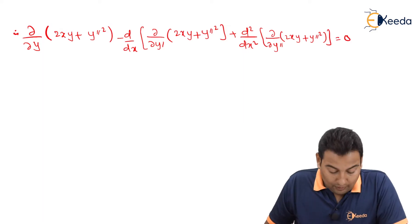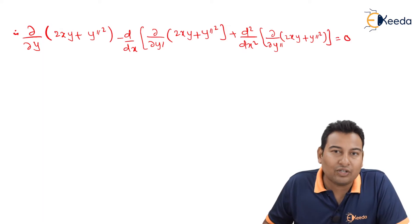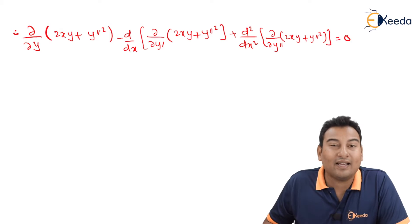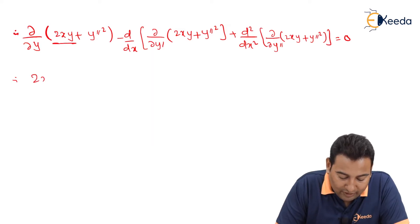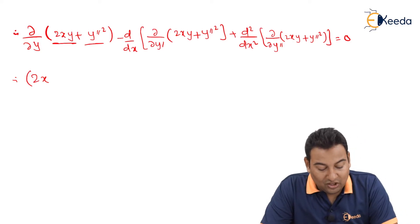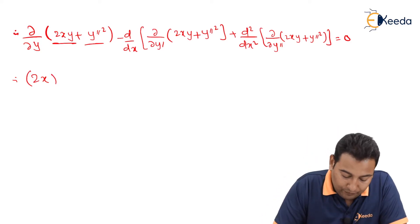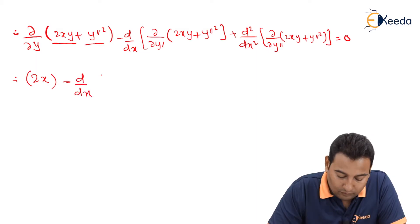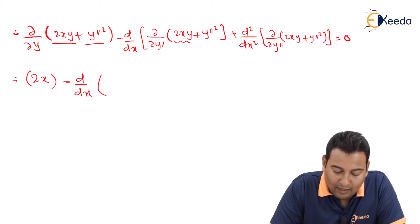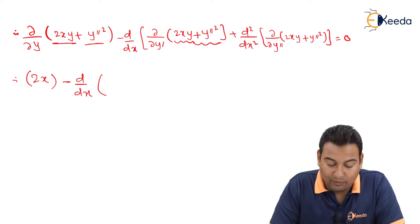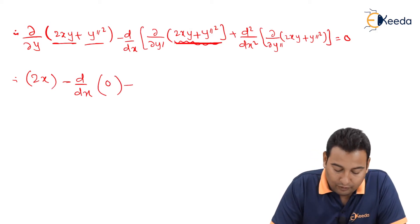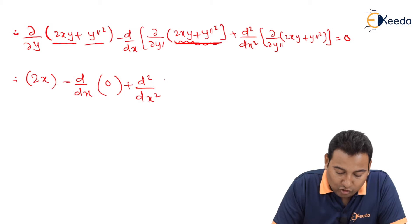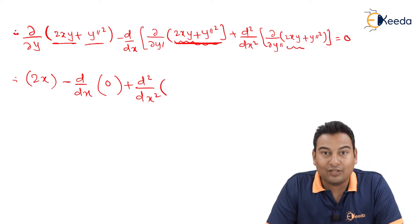Let's differentiate with respect to y - all others like x, y dash, y double dash are treated as constants. With respect to y, in the term 2xy, 2x is constant so the derivative is 1; the second term is zero because y double dash is a constant with respect to y. Minus d/dx of: with respect to y dash this derivative is zero, and the second term is also zero, so the entire term is zero because there is no y dash.